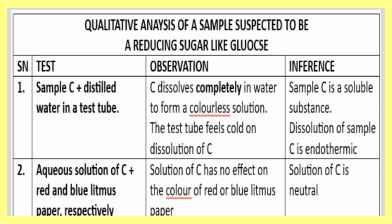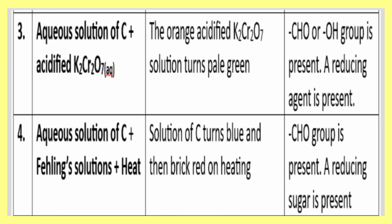Column two: aqueous solution of C plus either blue litmus paper or red litmus paper. Your observation must be that solution C has no effect on the red litmus paper or blue litmus paper. If you really do the test and put red litmus paper inside any solution of glucose, there will not be any change in reaction whether red or blue. Your conclusion is that solution C is neutral to litmus paper.